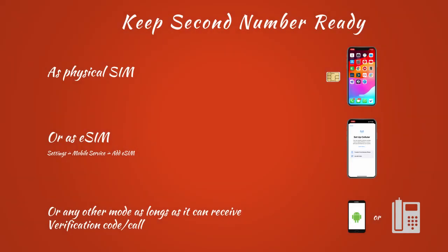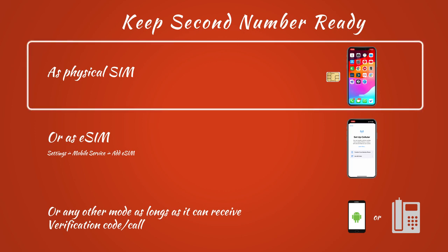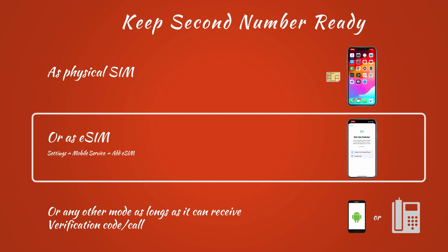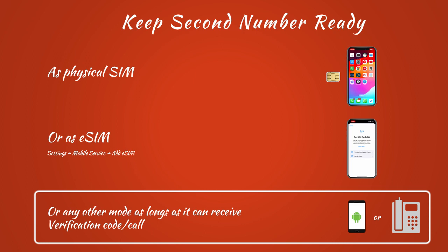As a first step, ensure you have your second mobile number ready to receive verification codes. There are several methods: if your physical SIM slot is vacant, you can insert your second SIM card. Alternatively, you can add your second number as an eSIM — contact your carrier support to obtain the necessary QR code for eSIM activation. You can also have your number ready on another mobile phone or a landline, as long as it can receive verification codes or calls.